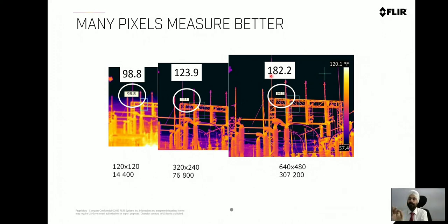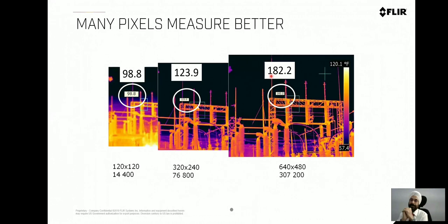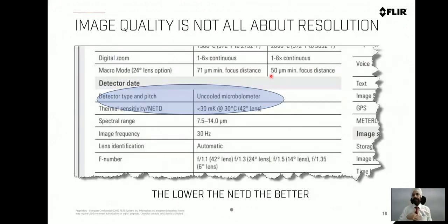This is IFOV — a very long topic, but simplified here. Fundamentally, all 9 pixels should be covered by the object to be measured. Make sure you choose the right product. Next is sensitivity — the lower the sensitivity, the better the product. These are the basic fundamentals before you choose a thermal camera.